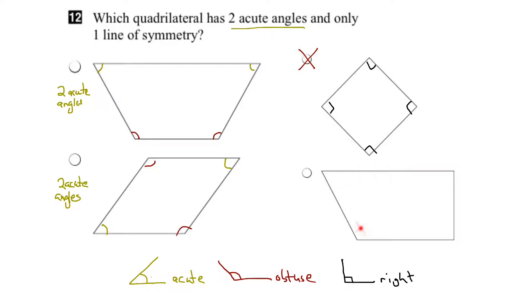Let's try this one here. We can notice that this angle is acute, this angle is obtuse, and these angles are right angles. So this one only has one acute angle, and therefore it is also not a possibility. We need to have two acute angles.